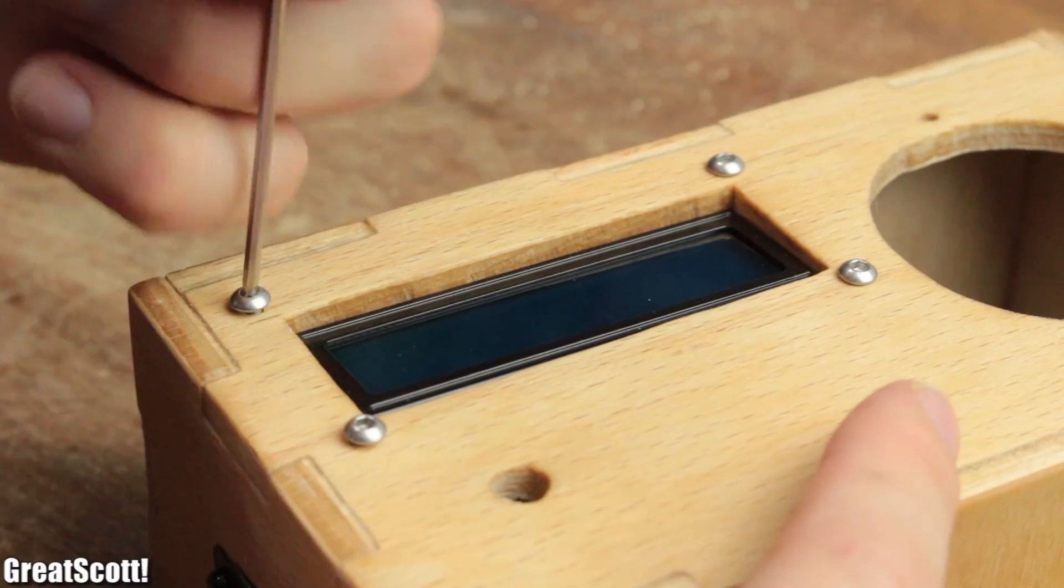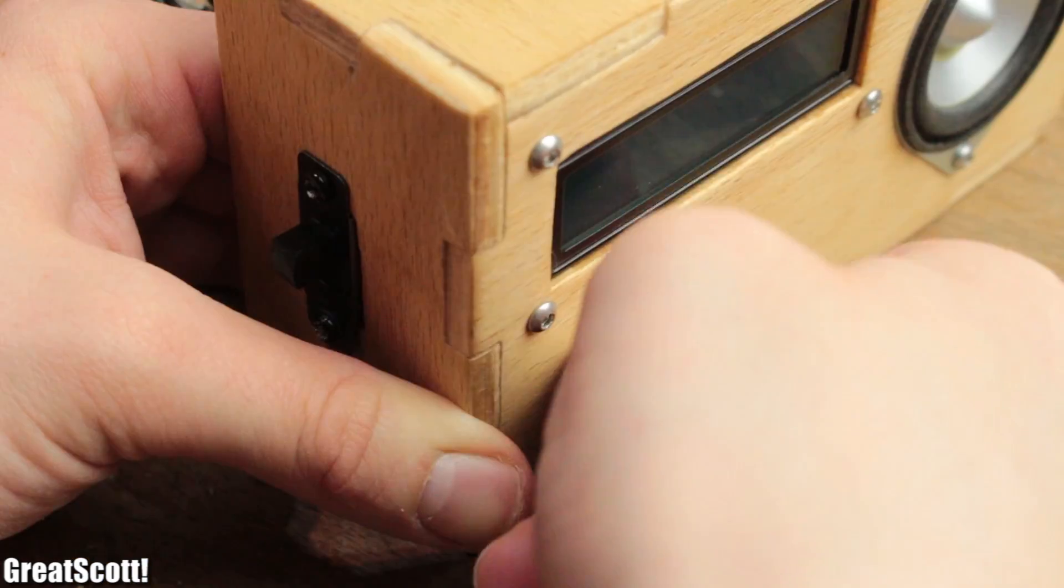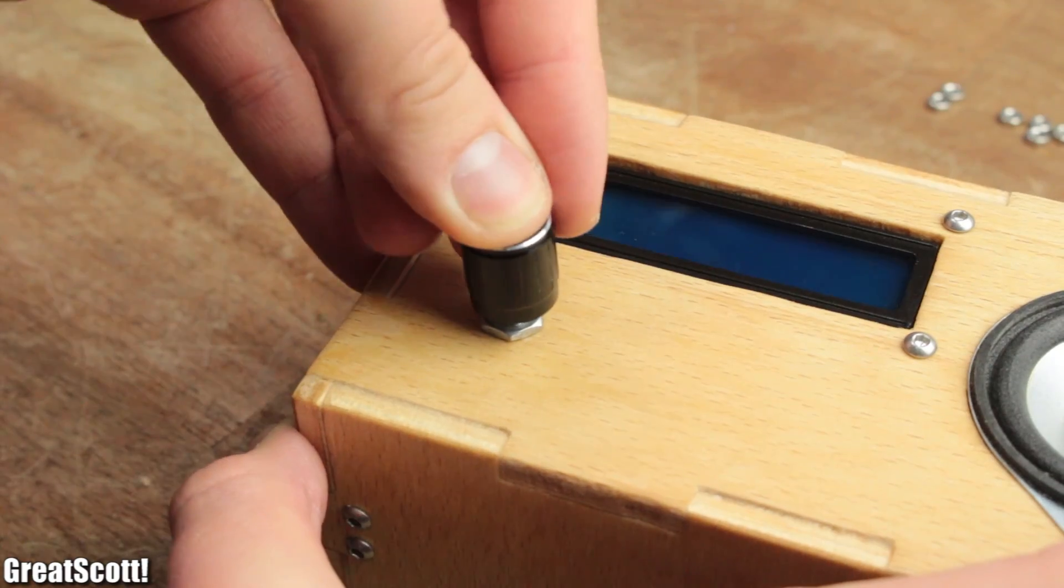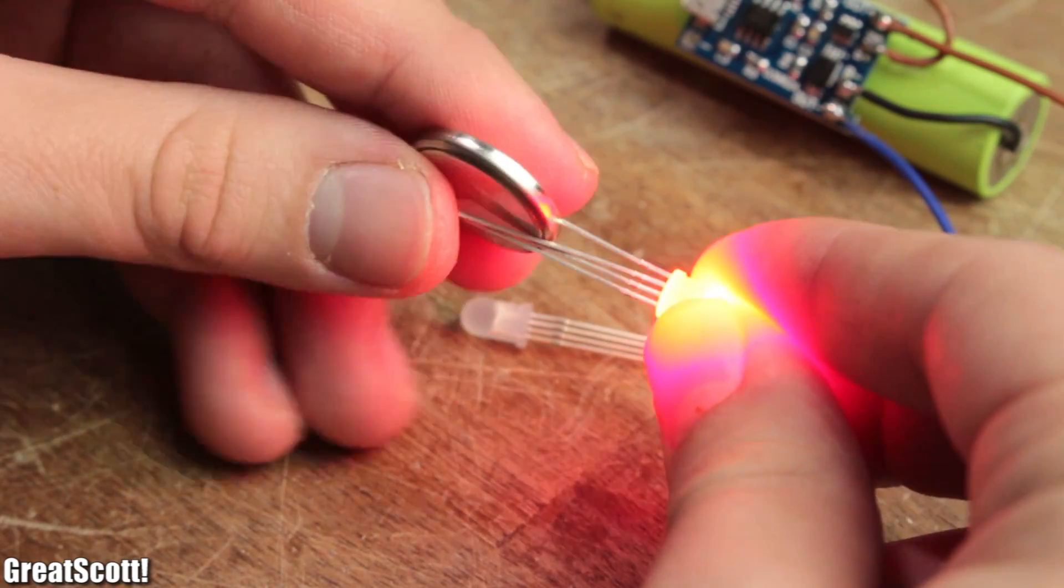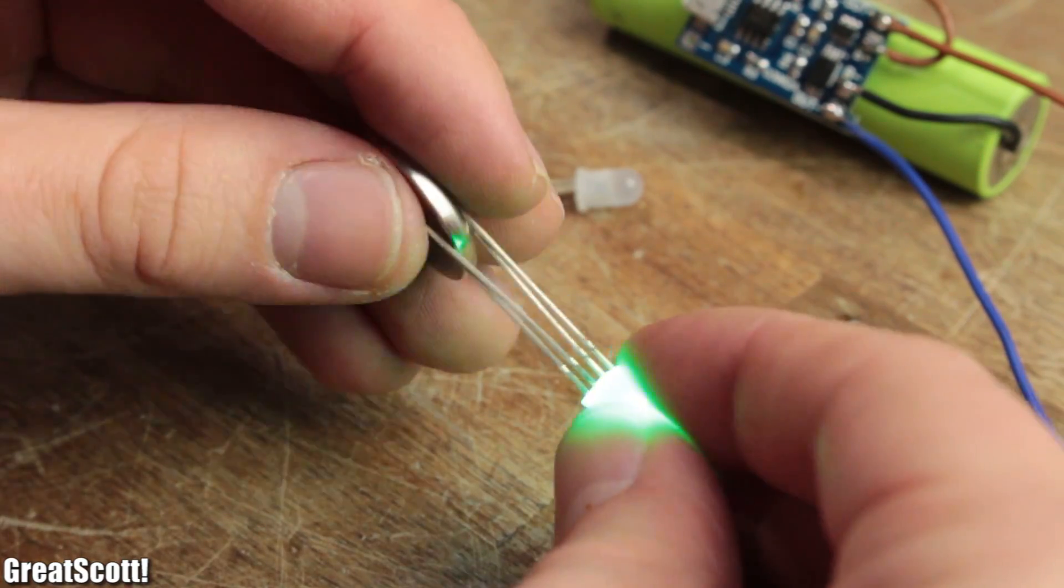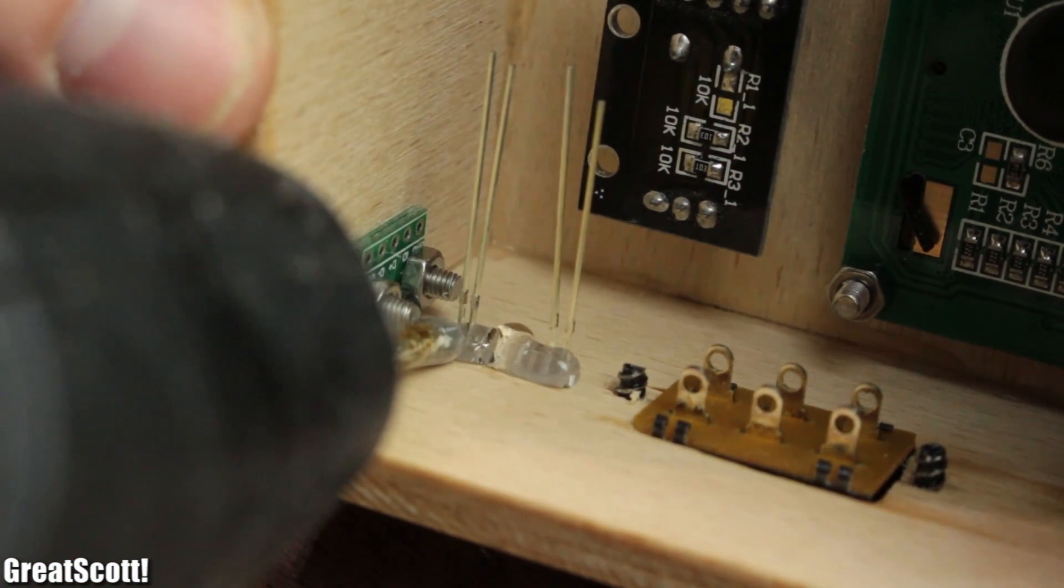the micro USB breakouts, the LCD and the speaker with M3 nuts and bolts and the rotary encoder with its own securing nut. Then I determined which pins of my RGB LEDs are red and green, removed the unnecessary ones and used hot glue to secure them inside the box.